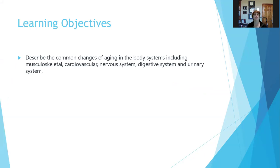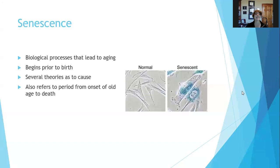The learning objectives are to be able to describe the common changes of aging in the body systems, including musculoskeletal, cardiovascular, nervous system, digestive system, and urinary system. No system escapes the complications of aging.